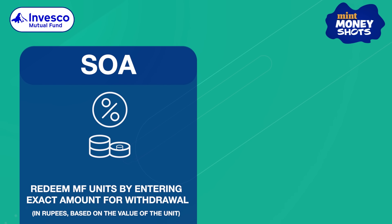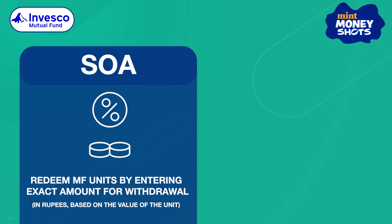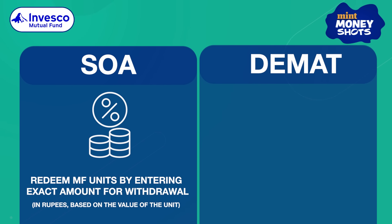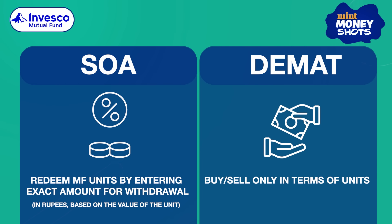In SOA, you can redeem the MF units by entering the exact amount you want to withdraw. In DMAT, investors can buy or sell only in terms of units.